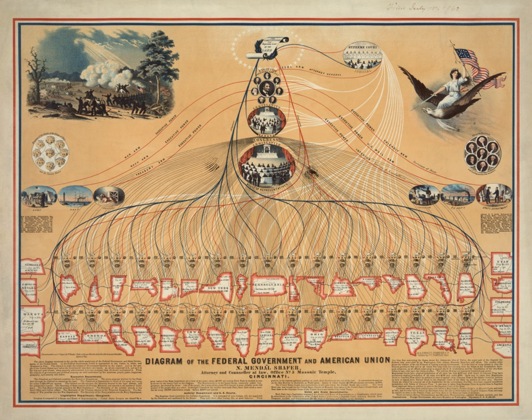In addition to the 435 voting members, there are six non-voting members, consisting of five delegates and one resident commissioner. There is one delegate each from the District of Columbia, Guam, the Virgin Islands, American Samoa, and the Commonwealth of the Northern Mariana Islands, and the resident commissioner from Puerto Rico.